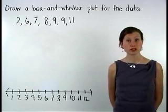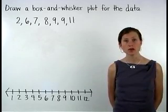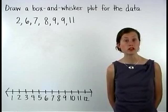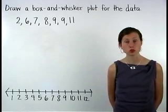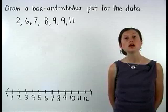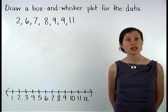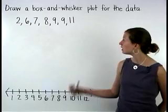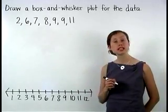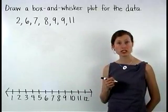A box and whisker plot is another way to display data. You'll need to remember what we learned about medians in the last section in order to draw box and whisker plots. To draw a box and whisker plot, begin by writing the data set from least to greatest. Here, notice that our data set is already written from least to greatest.